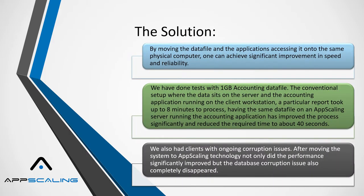The solution: by moving the data file and applications accessing it into the same physical computer, one can achieve significant improvement in speed and reliability. We have done tests with 1 gigabyte accounting data files. In the conventional setup — where the data sits on the server and the accounting application runs on the client workstation — a particular report took up to 8 minutes to process. Having the same data file on an App Scaling server running the accounting application reduced that time to about 40 seconds.